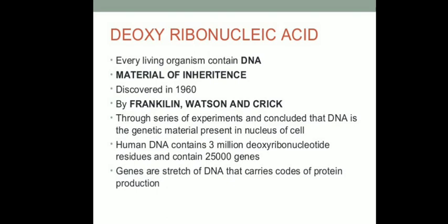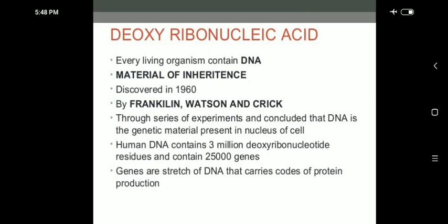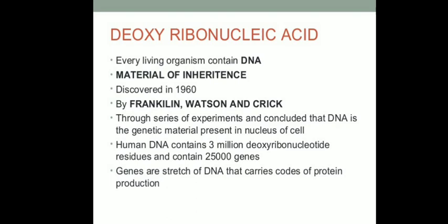Every living organism generally contains DNA, and this genetic material is transferred from one generation to another. The structure of DNA was proposed by Watson and Crick in the year 1953, and the structure was revealed using the X-ray crystallographic photographs of Rosalind Franklin. DNA may exist in various forms like A, B, and D. It was concluded that DNA is the genetic material present in the nucleus of the cell.